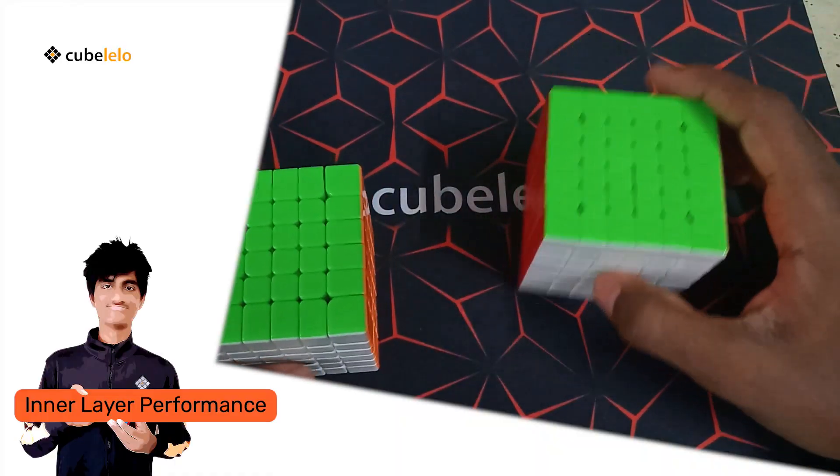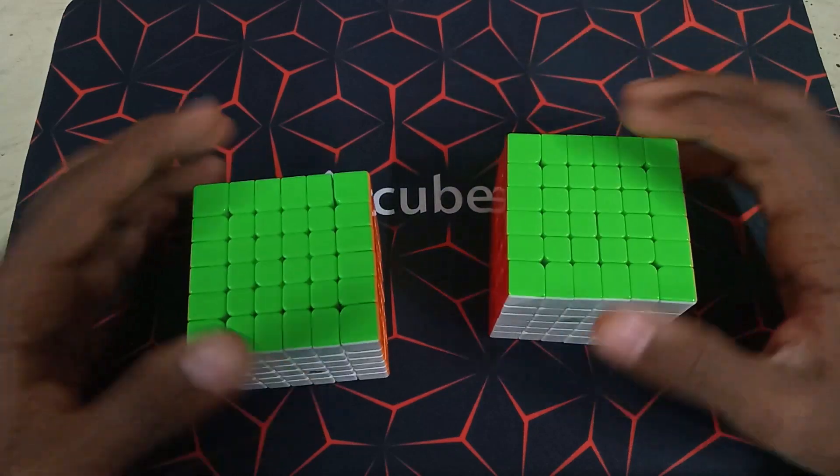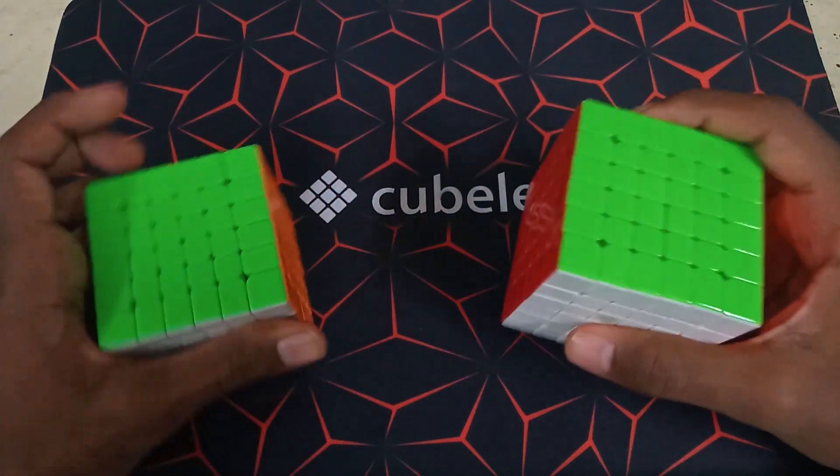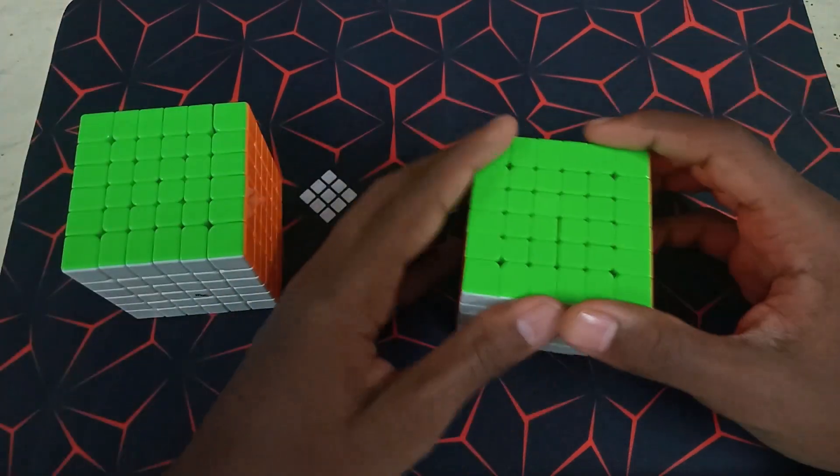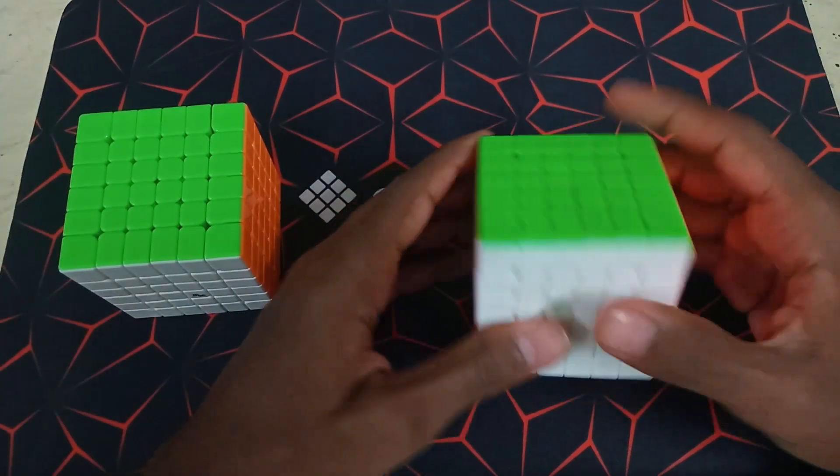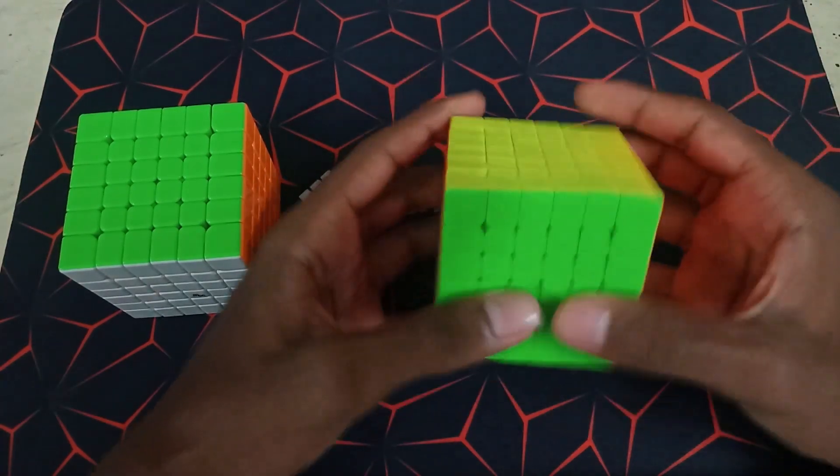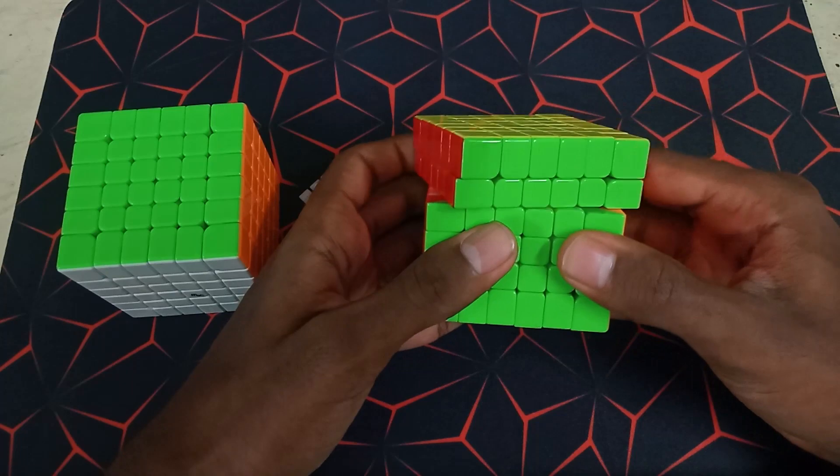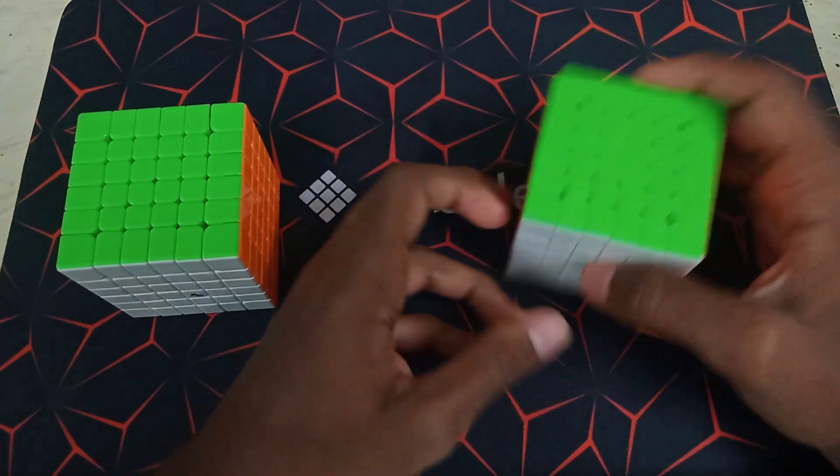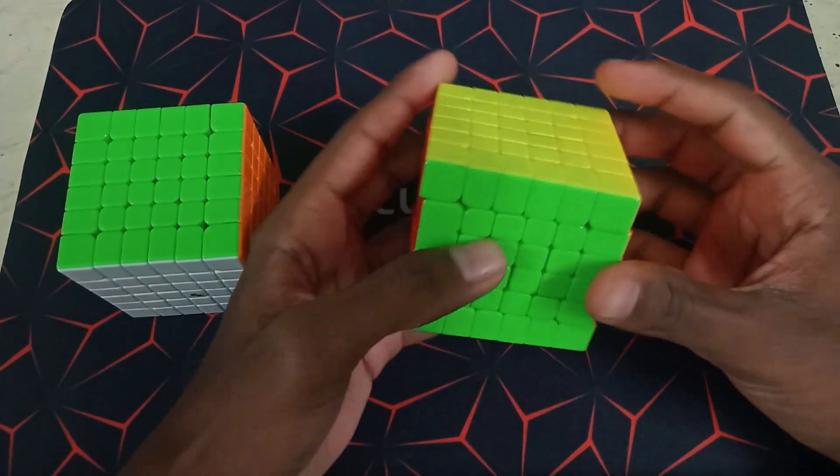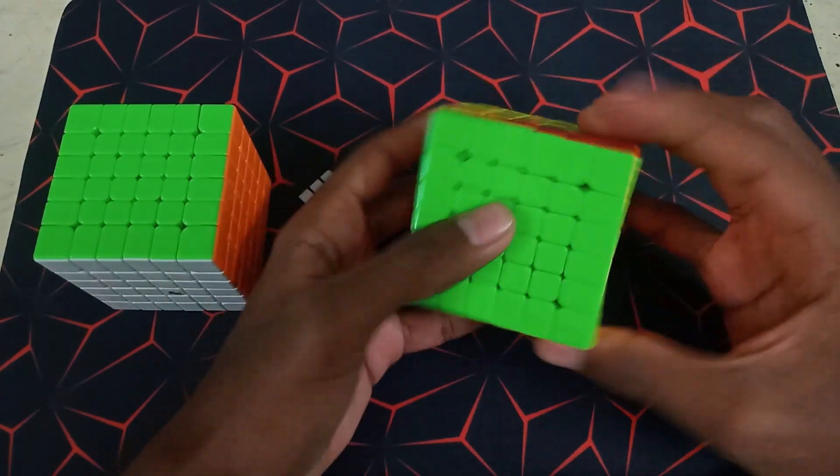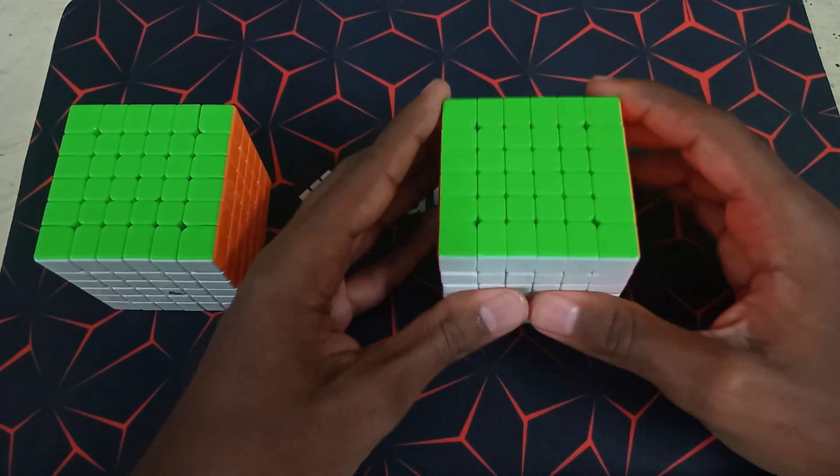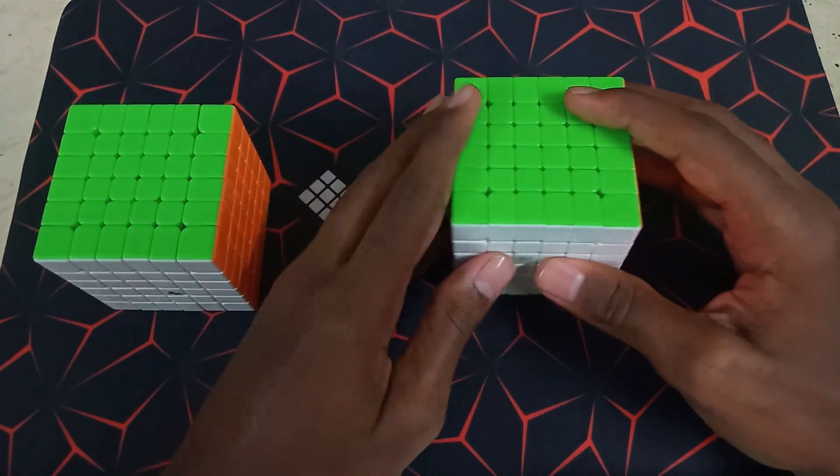So now let's move to inner layer performance, which is a very important aspect of big cubes, especially. Since, as I've been saying throughout this video, since the Shadow is heavier and tighter, it just feels a lot more stable. So a lot of people would prefer this and even in terms of inner layers, they might prefer this cube. But it does tend to give you a few lockups and it's not really very friendly to fast turning, I would say, but it is extremely stable at the same time. So if you're a slow turner, you would definitely enjoy the Shadow MV1.